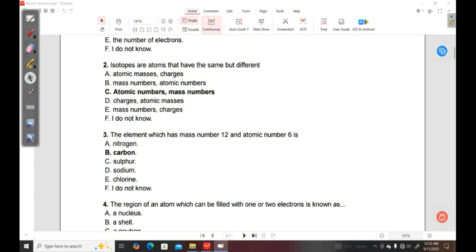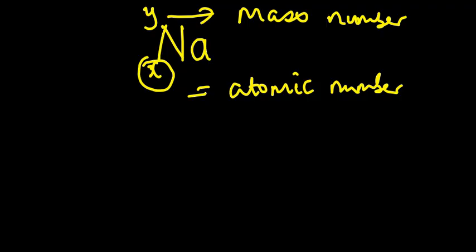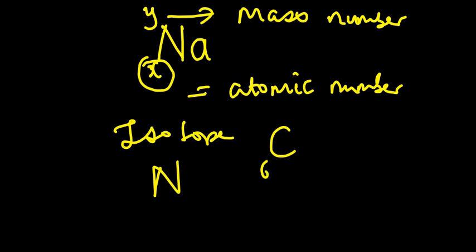So when you look at an isotope, for instance carbon, your carbon atom has different isotopes. For instance, it's carbon 6.